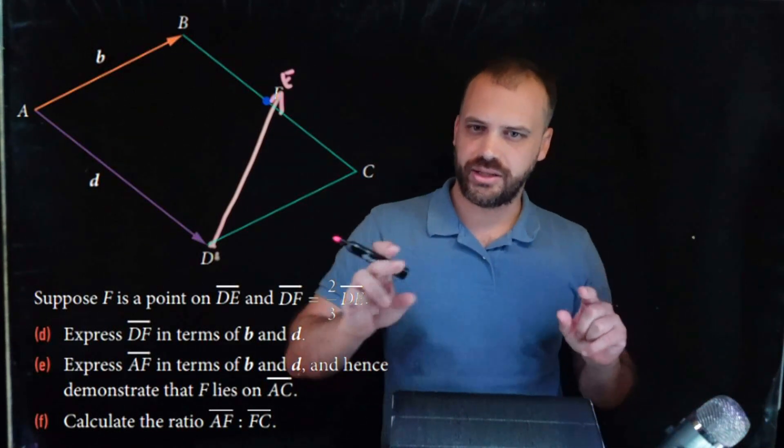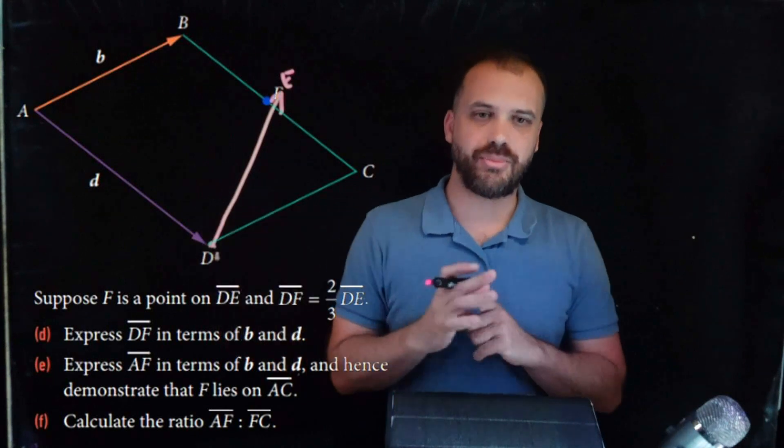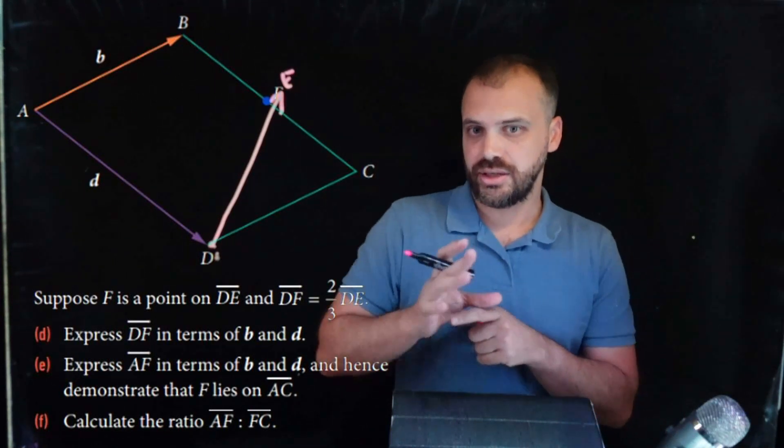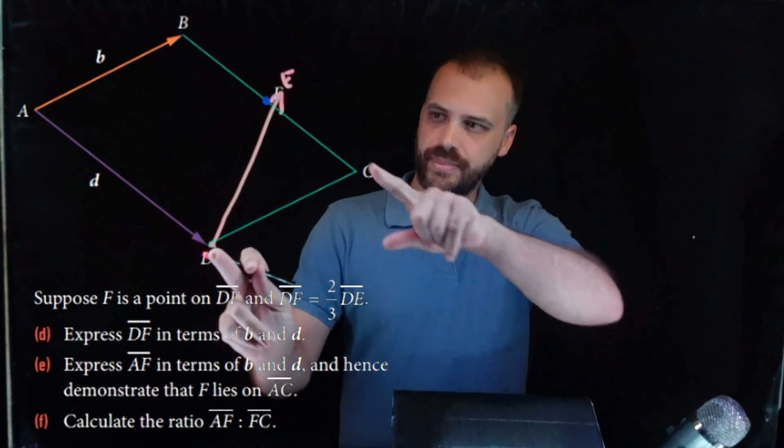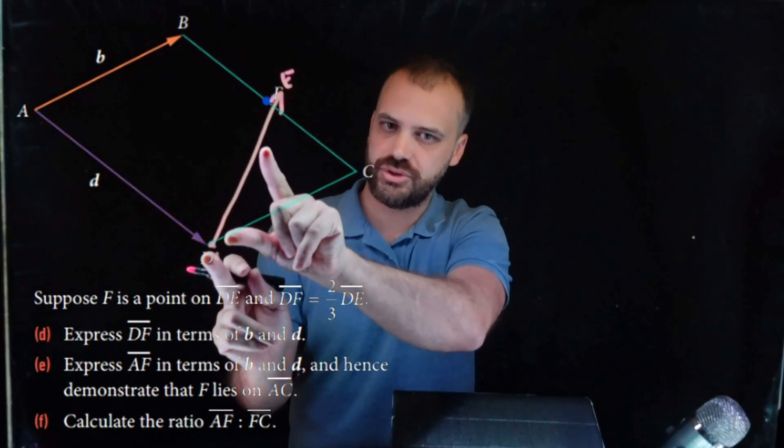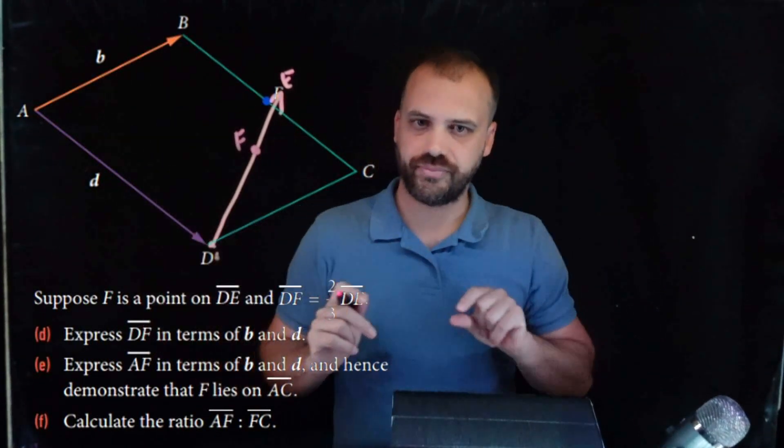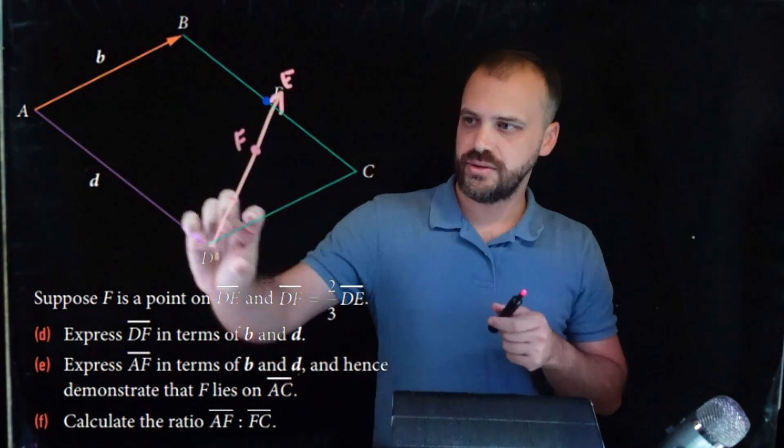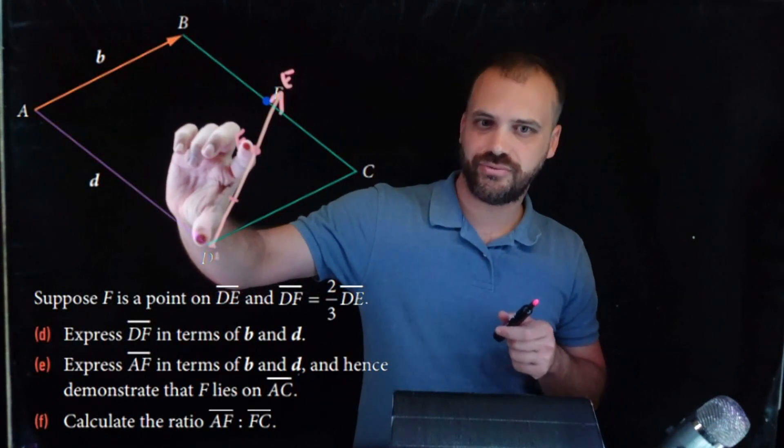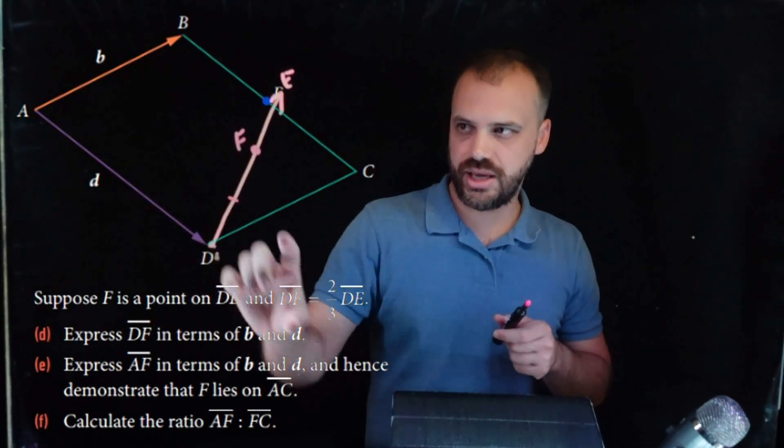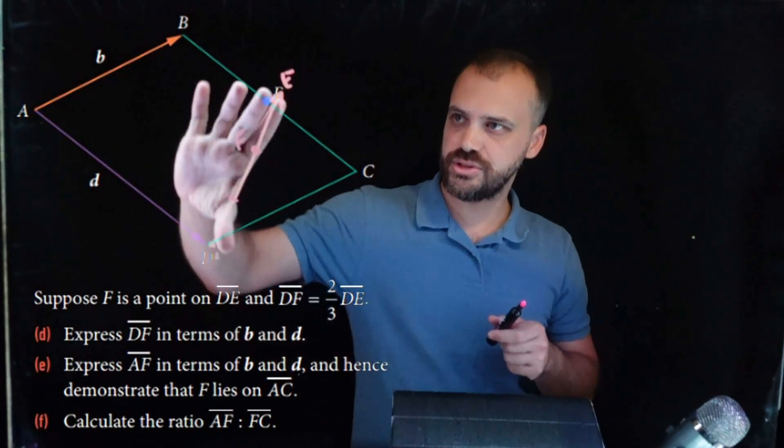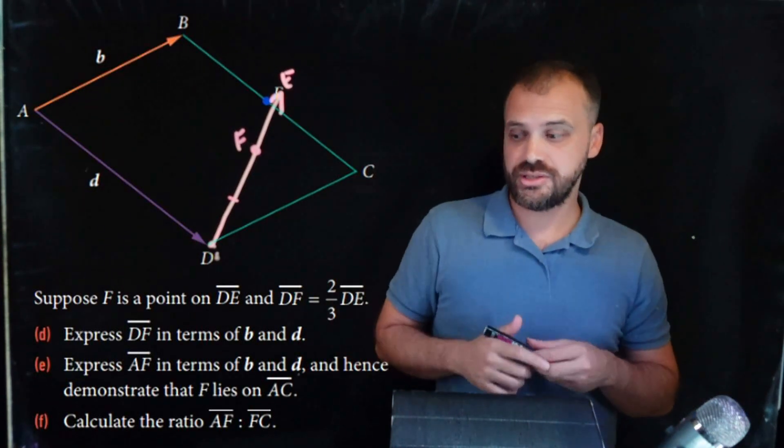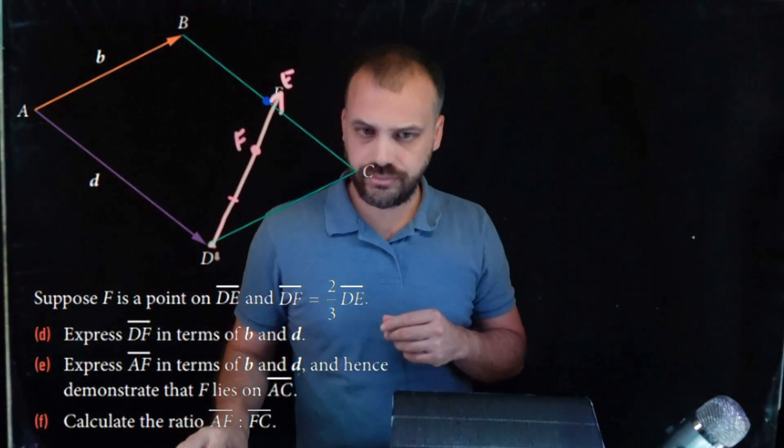So confusing. Alright, there is a point F on here somewhere. And DF is equal to two-thirds of DE. So this is DE, and DF is equal to two-thirds of it. Hopefully that makes sense. If we broke this vector into three parts, one-third of DE, two-thirds of DE. And we're told in our question that DF is equal to two-thirds of DE. I have a feeling that now that we've drawn that, now that we understand what this drawing is, the rest of it's going to be pretty straightforward. Maybe, let's see.